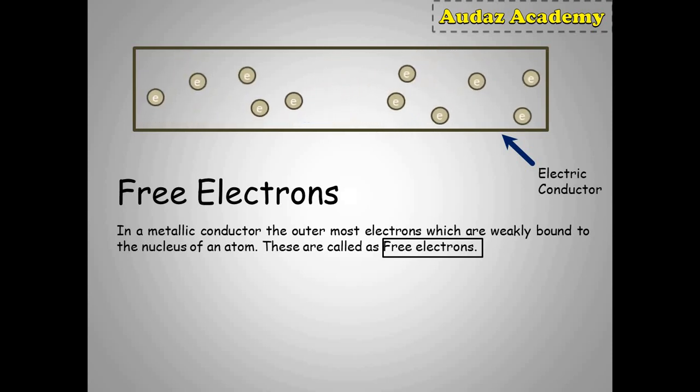In a metallic conductor, the outermost electrons are weakly bound to the nucleus of an atom. On gaining sufficient energy, it frees itself from the outer valence orbit. These are called as free electrons.